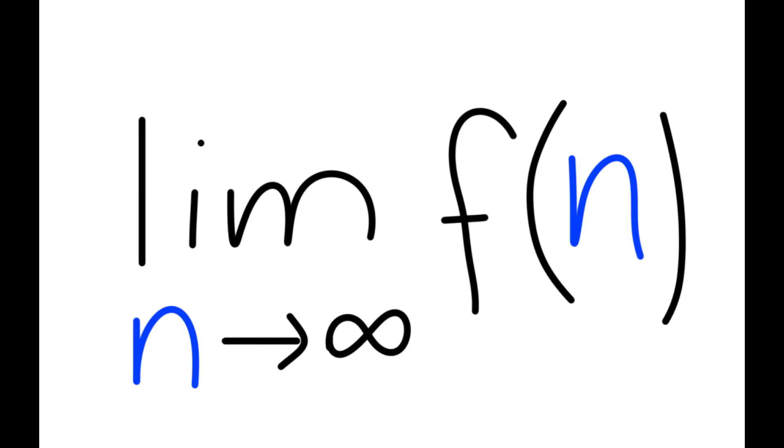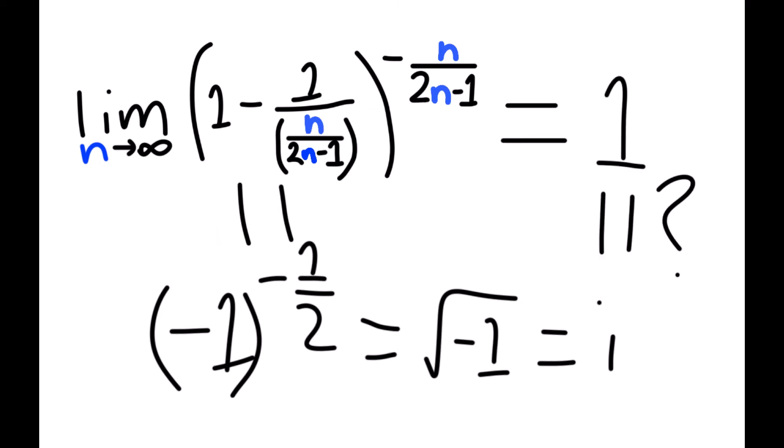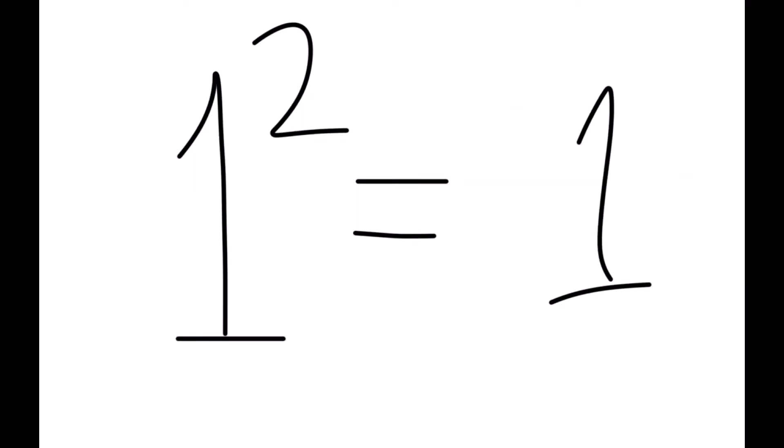Which can sometimes mislead you to thinking weird stuff, like that one time I tried to calculate a real limit which approaches i, and I got i is equal to 1, which is totally not true, as 1 squared is not negative 1 but just 1.